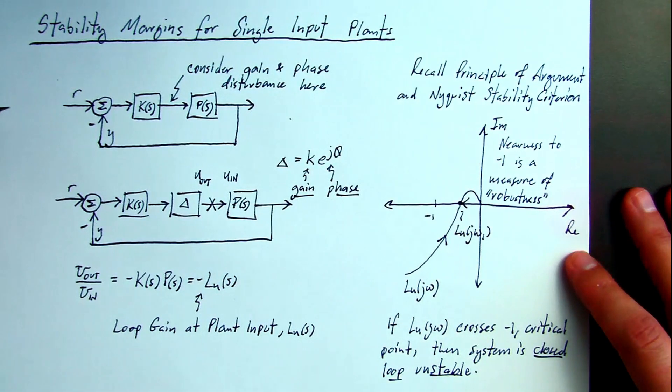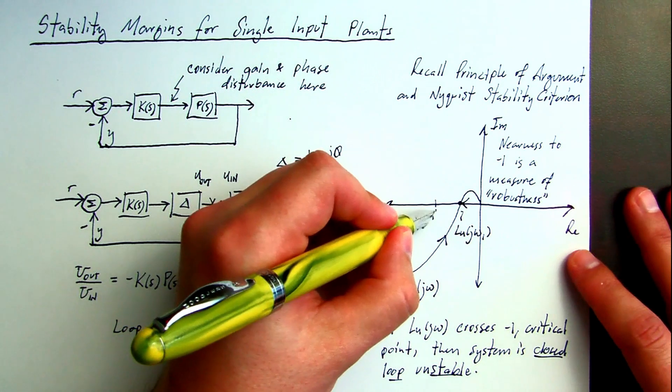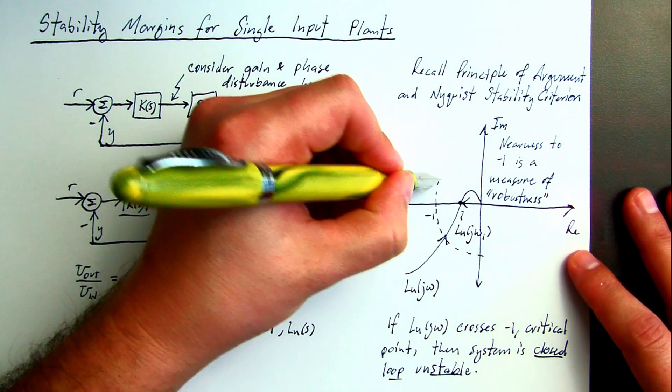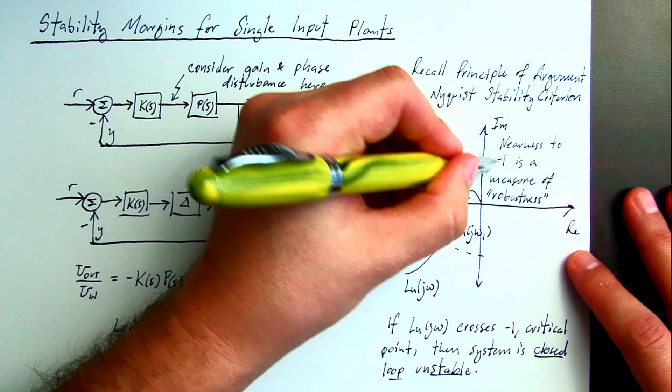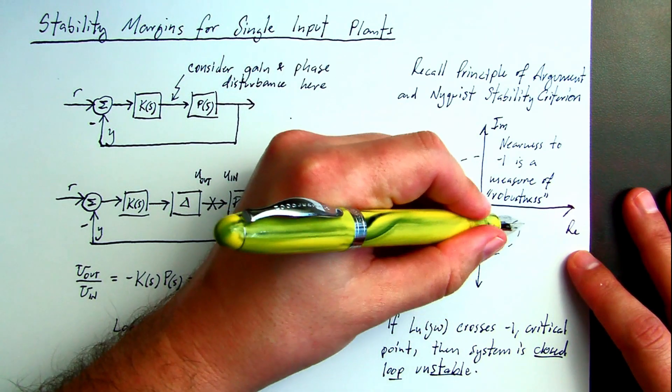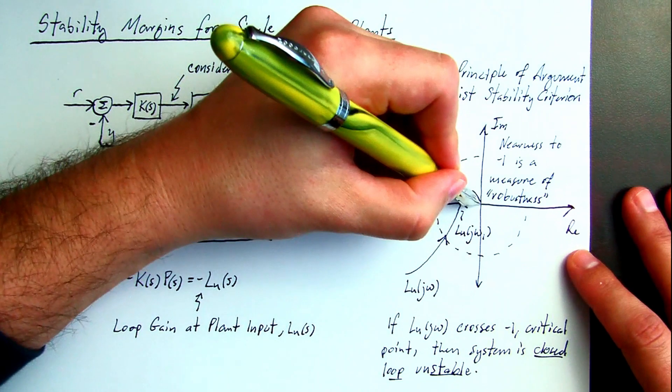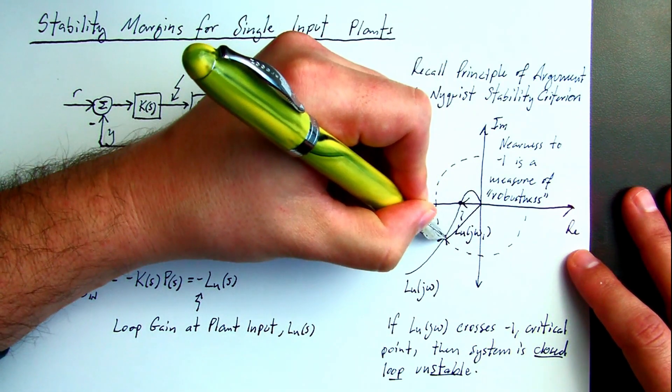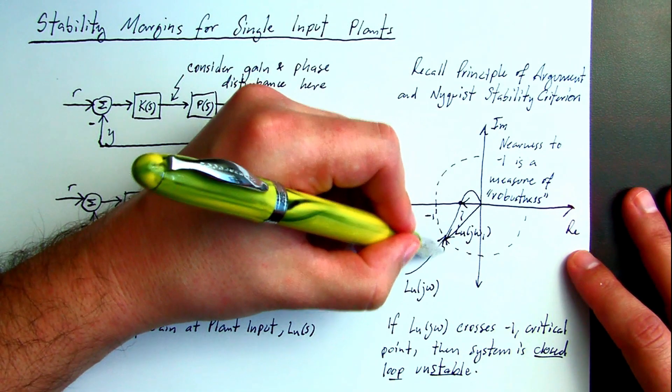For the second phasor of interest, we draw the unit disk around the origin. And then the phasor, or the loop gain evaluated at frequency, call it omega-2, that intersects the unit disk.